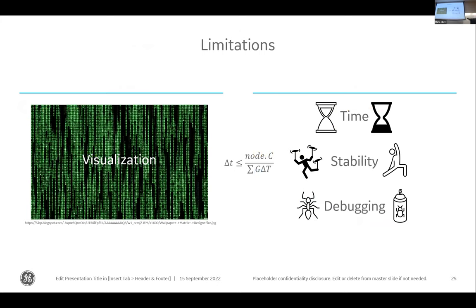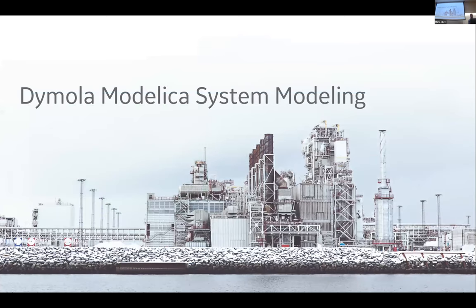The limitations of MATLAB include the visualization aspect — you're just working with code. There's also the time step governed by node capacitance divided by the sum of the G terms, which is a limitation. When we made this it was a one-to-one simulation time ratio — a 70-hour transient required 70 hours to run; now it's roughly 25 hours or so. Stability and debugging are not exactly fun, though debugging MATLAB is actually easier than the Dymola modeling we're about to discuss.